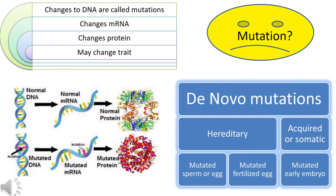What happens to a gene that makes it not perform its function? Changes to DNA are called mutations, and this will in turn change the mRNA. If the mRNA is not normal, the protein will not be normal and this may change the trait. These mutations are called de novo mutations or new mutations. They may be hereditary or acquired somatic. It is hereditary if the mutation has occurred in the egg or sperm, and it will be carried to further generations. If the mutation has occurred in somatic cells, it will not be carried to further generations, and only the affected individual will show the disorder.